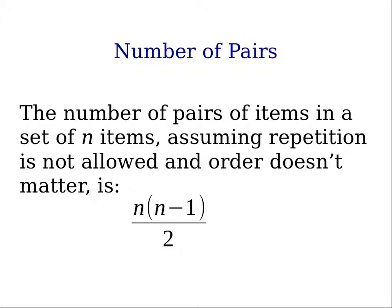Let's consider a set of n items. We want to create pairs of items, assuming that we will not allow repetitions within the pairs, so we will not allow a pair to contain two items which are the same, and that we don't care about the order, so a pair AB is the same as a pair BA. Then the number of pairs of items that we can create is n times n minus one divided by two.